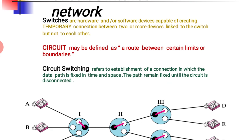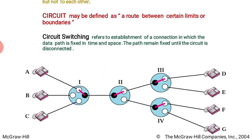A switch doesn't mean it is always hardware; it may also be software, as we will see when we talk about datagram and packet switching. A switch is a hardware or software device capable of creating a temporary connection between two or more devices that may or may not be directly linked to each other. A circuit may be defined as a route between certain limits or boundary.